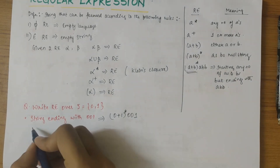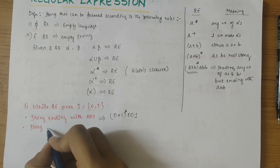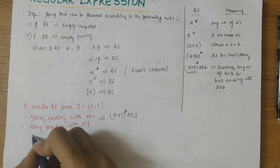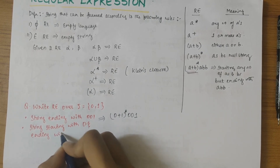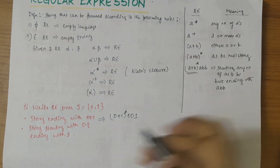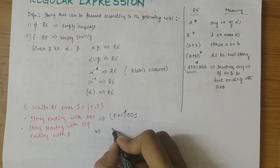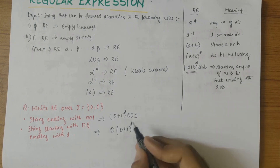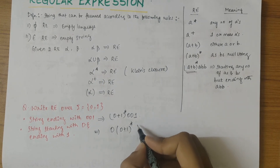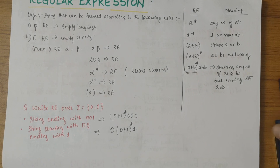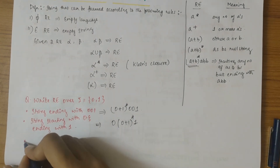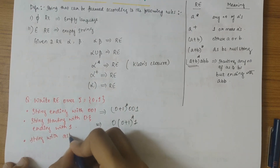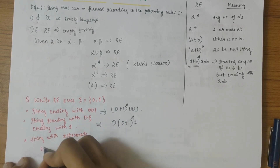Similarly, for a string starting with 0 and ending with 1: we write 0 at the start, in the middle there could be anything — any number of 0's and 1's including the null string, (0+1)-star — followed by 1 at the end. Let's also write a condition for a string with alternating 0s and 1s.